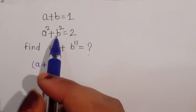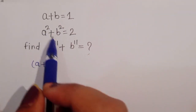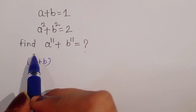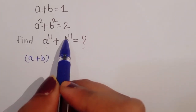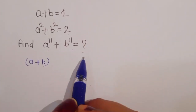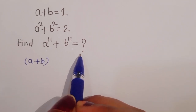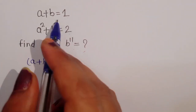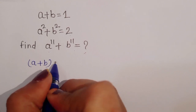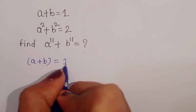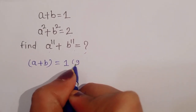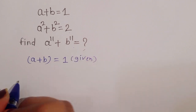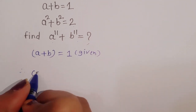a plus b is equal to 1 and a square plus b square is equal to 2. We have to find out the value of a power 11 plus b power 11. First we have to see what is given here: a plus b is equal to 1.